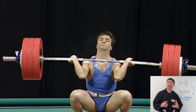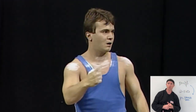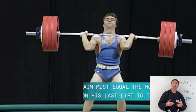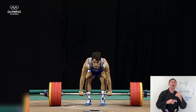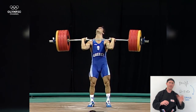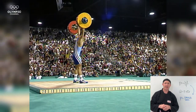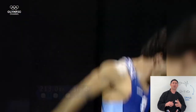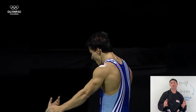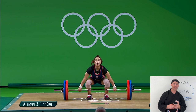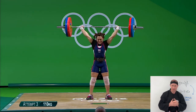Olympic weightlifters performing clean and jerks and snatches — taking a bar from the ground over the head in one motion — require tremendous muscular power. One lifter just hoisted almost 477 pounds overhead in a jerk. A 47-kilogram female lifter moved over double her body weight. Watch just how fast they move to get under the bar; the speed is extraordinary.